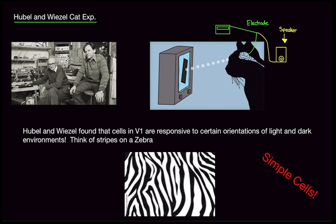What they did is they took a cat, anesthetized it, and put it in a head frame so it could not move its head — it's looking straight forward. They hooked up an electrode to V1, the primary visual cortex, and attached to this electrode was a speaker. Any time the cells in the visual cortex fired, they would hear a static noise. If they didn't hear anything, that meant the cells were not firing. They had an overhead projector projecting onto the cat's retina — one eye — and they would record what they saw.